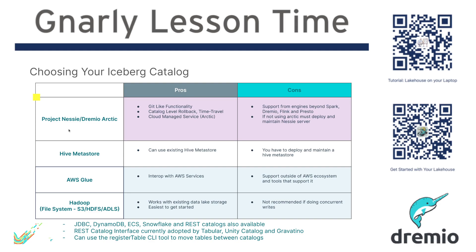Right now there are only a few catalogs that have adopted the REST catalog interface — it's still early days. That would be Tabular, the company created by the creators of Apache Iceberg; Unity Catalog, which is the Databricks catalog; and Gravitino, an open source catalog meant for cataloging things beyond just iceberg tables, but which exposes iceberg tables through that interface along with the other things it tracks.